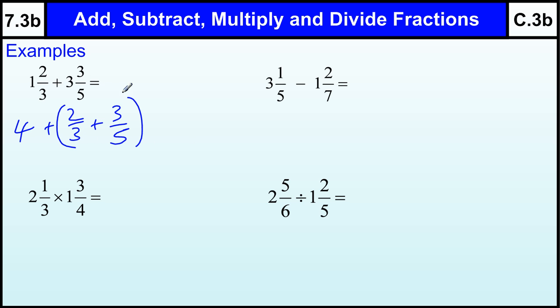Now, when we're adding 2 thirds and 3 fifths, we need to make them out of a common denominator. And the common denominator quite often is the 2 numbers multiplied by each other because that's often the smallest number they both go into. So 3 times 5 is 15. Is there a smaller number both 3 and 5 go into? Well, there isn't.